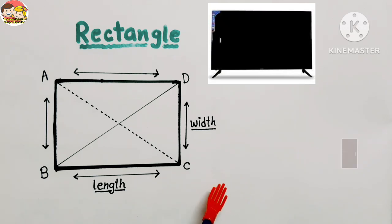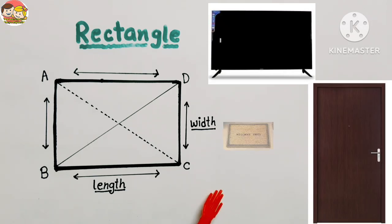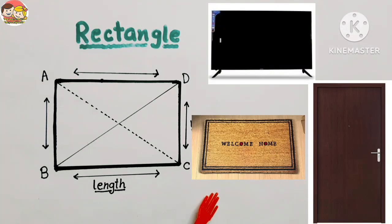Now examples: TV, door, doormat, etc., are examples of the rectangle shape.